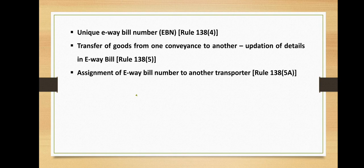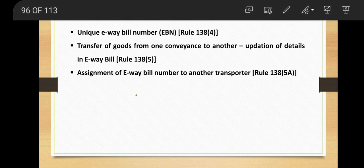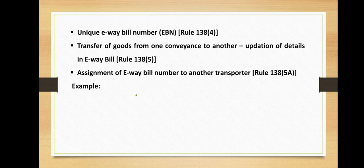Rule 138 clause 5A — assignment of e-way bill number to another transporter: the consigner or the recipient who has furnished the information in Part A of Form GST EWB-01, or the transporter, may assign the e-way bill number to another registered or enrolled transporter for updating the information in Part B of Form GST EWB-01 for further movement of the consignment. However, after the details of the conveyance have been updated by the transporter in Part B of Form GST EWB-01, the consigner or recipient who has furnished the information in Part A shall not be allowed to assign the e-way bill number to another transporter.